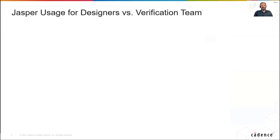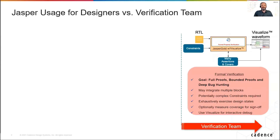Let's compare Jasper formal usage methods by the designer to those of a formal verification team. Traditional usage of formal by a verification team has the goal of full proofs, bounded proofs, and debug hunting. This will typically be done integrating multiple blocks and using complex constraints in formal coverage. This is very different from designer usage.